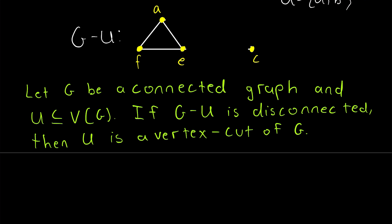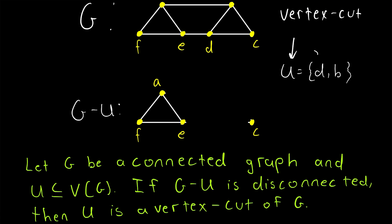First, here's our definition for vertex cut. Let G be a connected graph and U is a subset of the vertex set of G. If G minus U is disconnected, then U is a vertex cut of G. And so that's what we saw up here. The set U is a subset of the vertex set of G, and G minus U is disconnected.